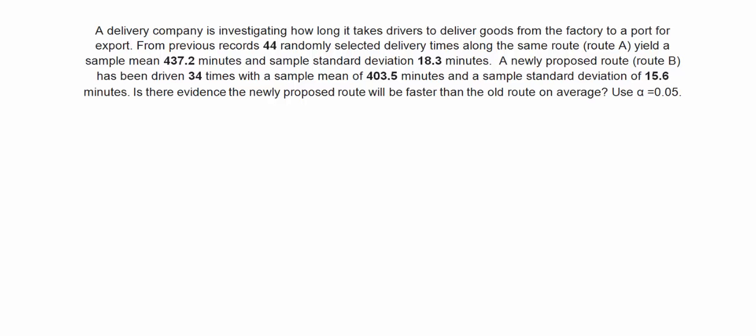So the null and alternative hypotheses for this is H0: mu A minus mu B equals 0. And the alternative is mu A minus mu B is, of course, greater than 0. Why is this? Because if mu B or the actual average of route B is faster, then the difference will be a positive value.